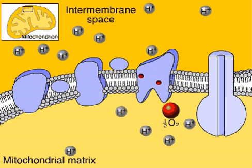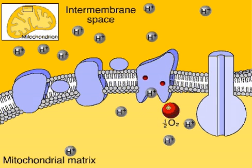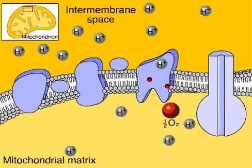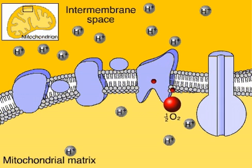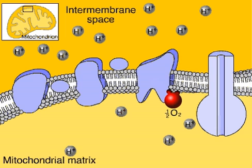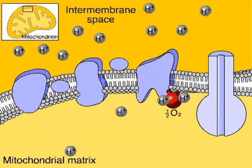Oxygen captures the electrons in the very last step in electron transport. The last complex adds a pair of electrons to an oxygen atom and two hydrogen ions, forming water.